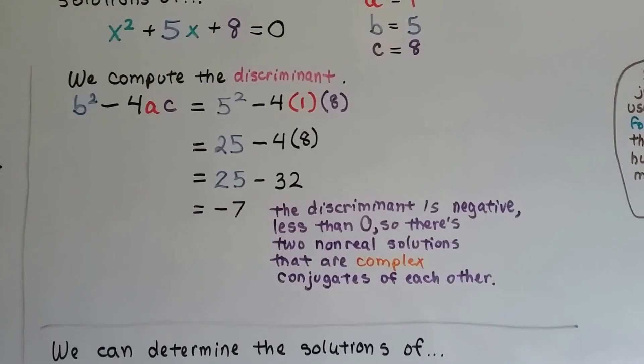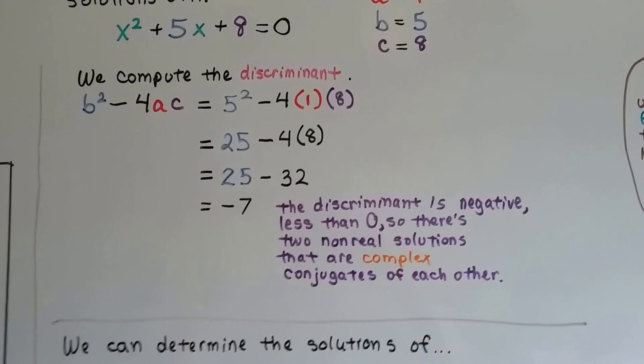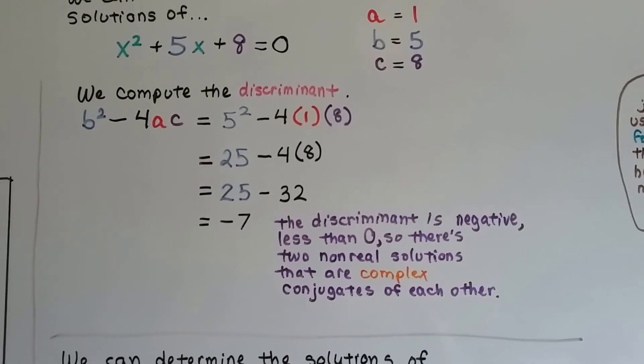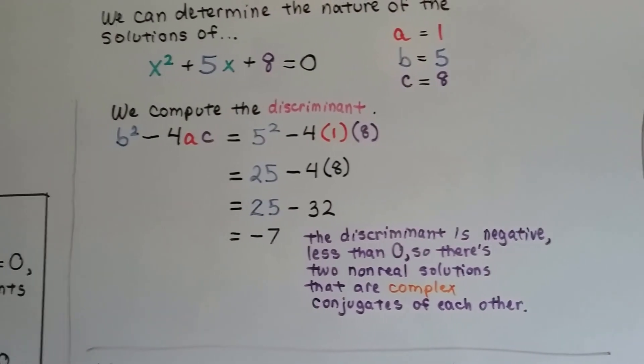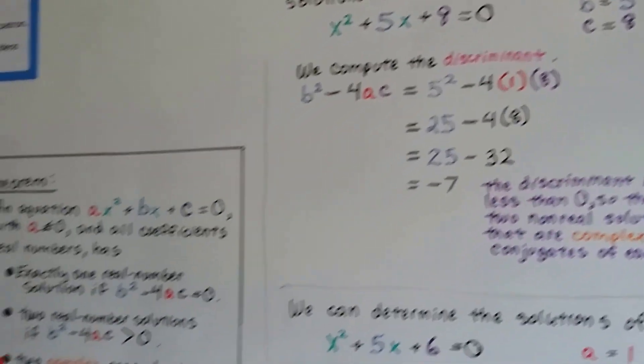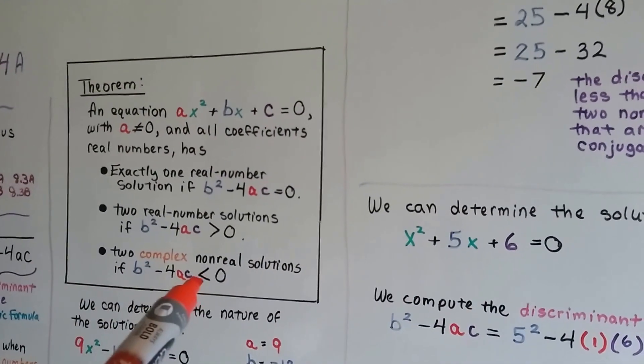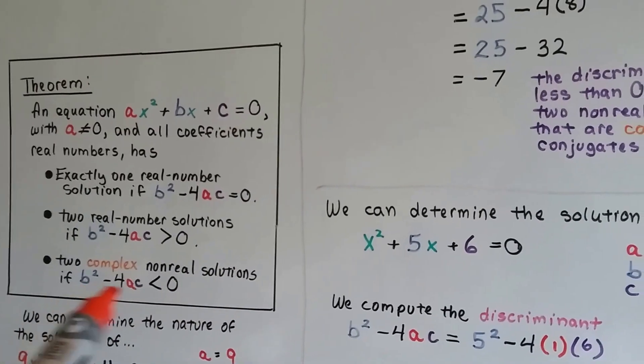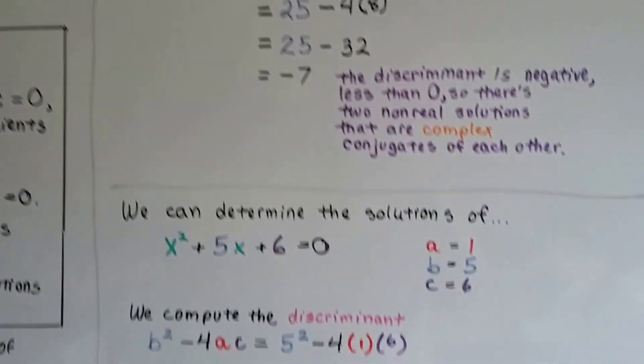So the discriminant is negative. It's less than zero. So there's two non-real solutions that are complex conjugates of each other. It's less than zero, so there's two complex non-real solutions.